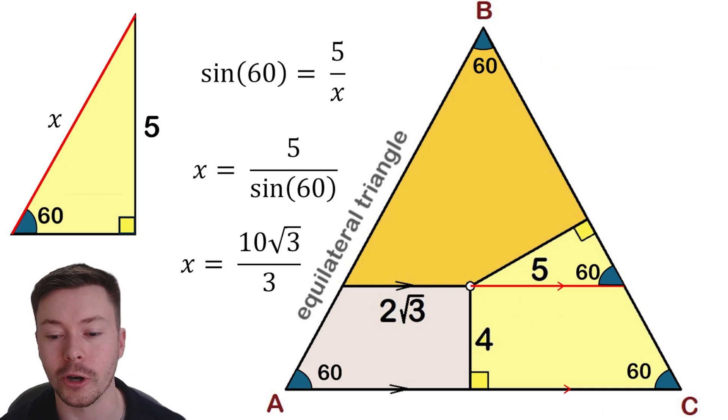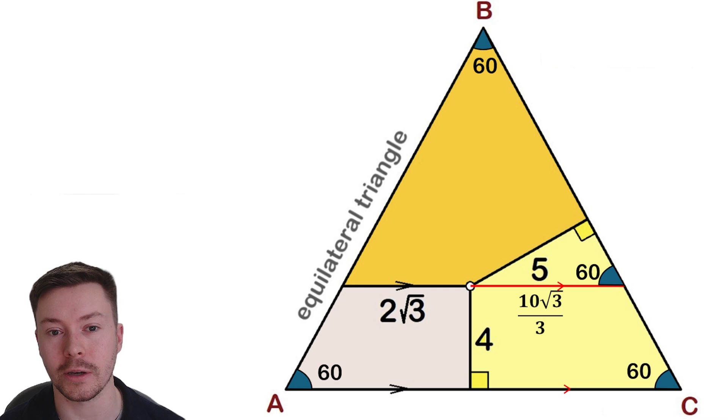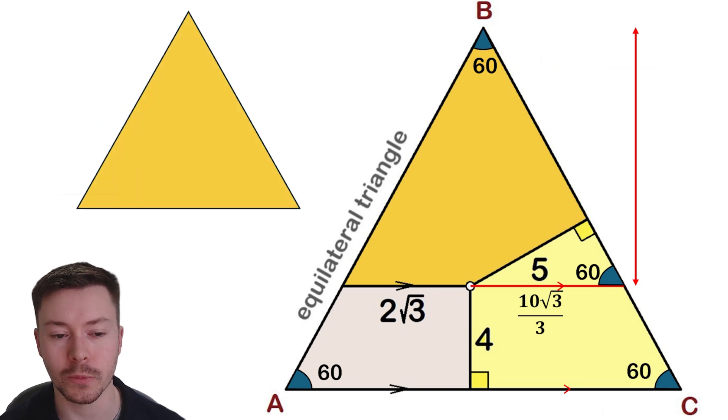So let's put that on the diagram: 10 root 3 over 3. Now we have got a full width at this height. Can we work out the height of this smaller triangle? So again, let's separate that out. Now we've got 2 root 3 plus 10 root 3 over 3 as the base of that. Can I work the height of that out?